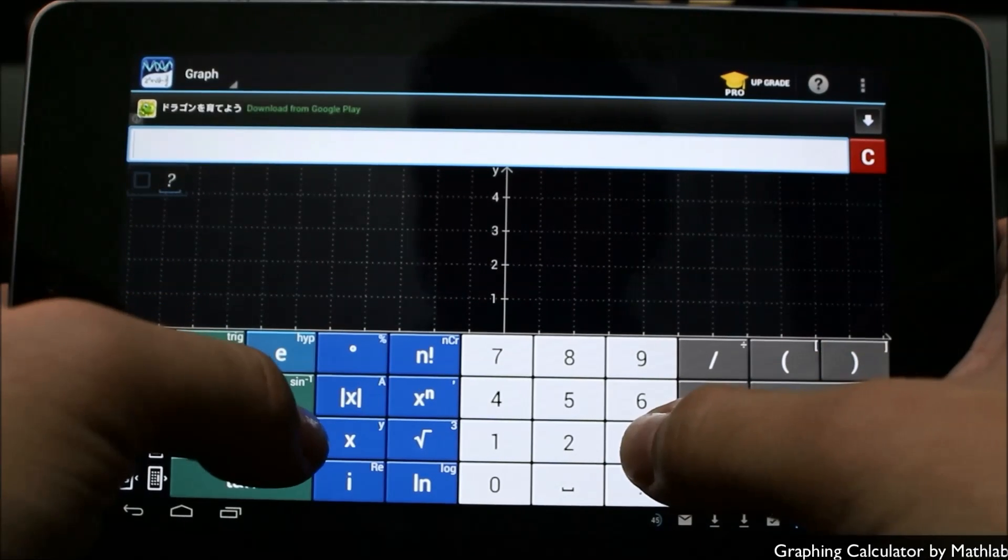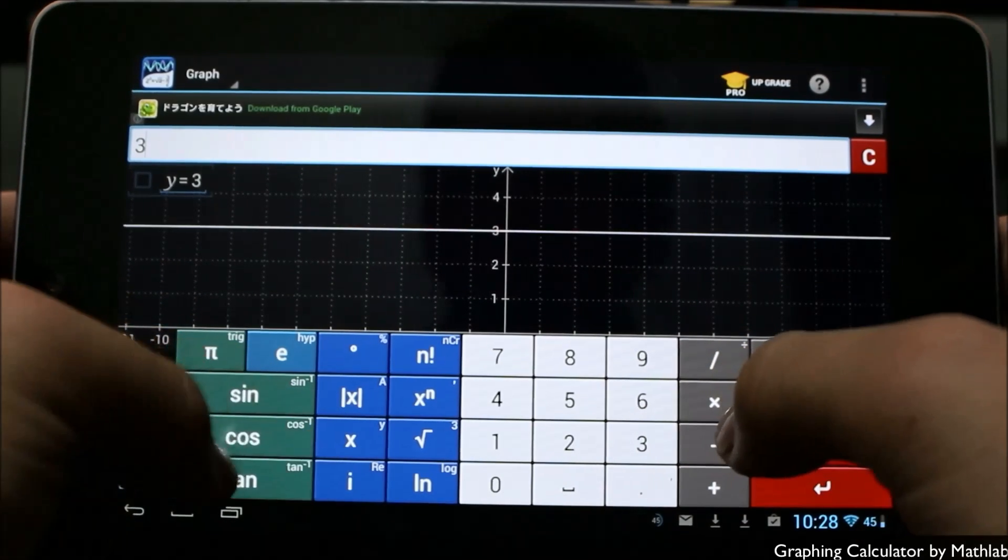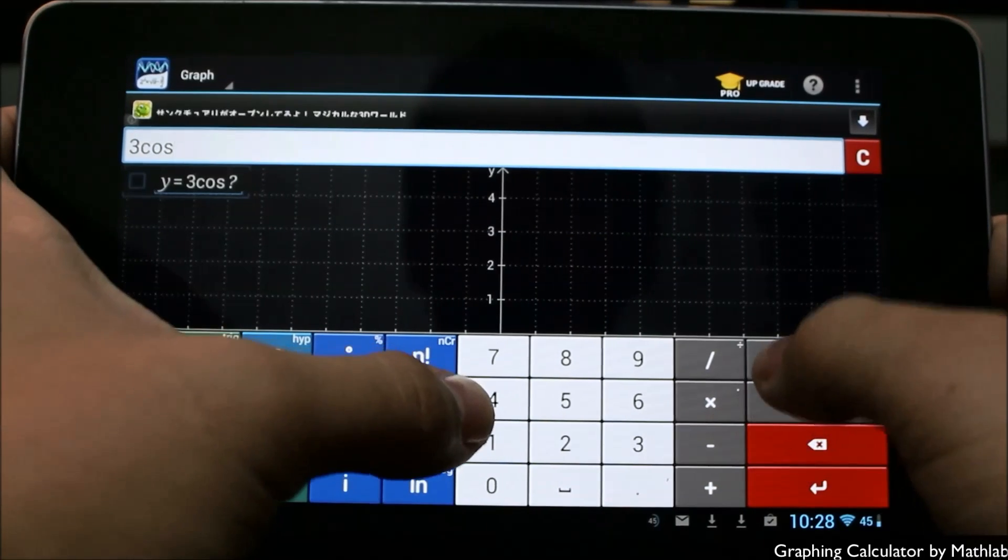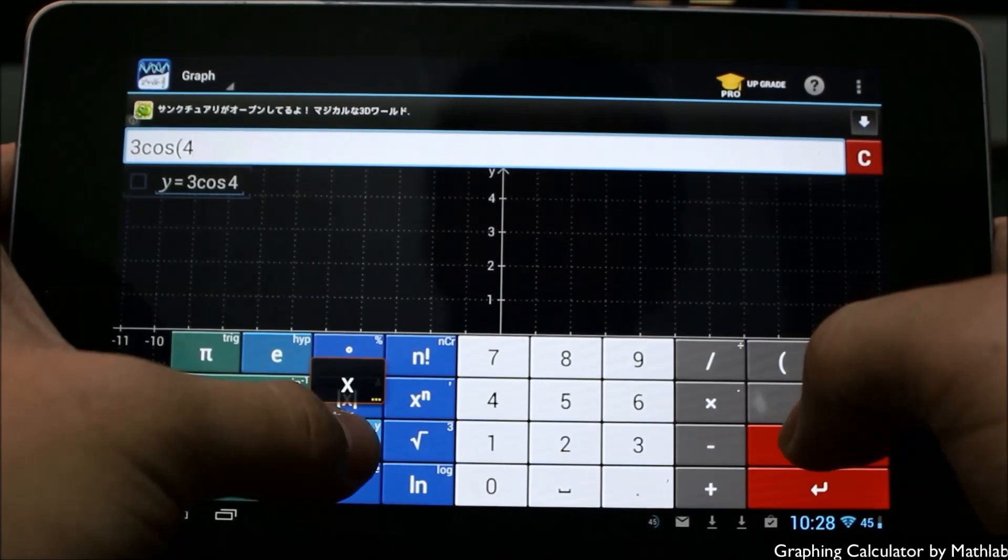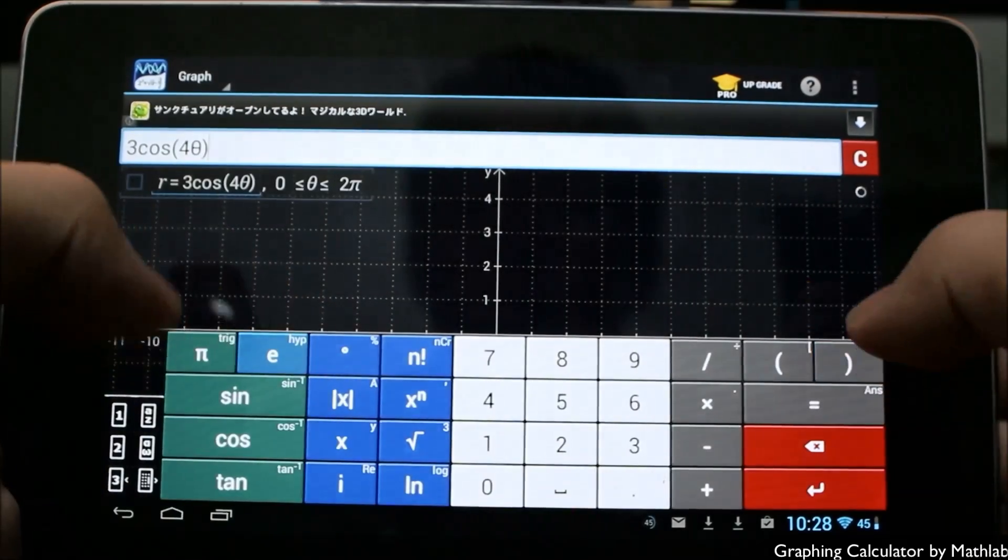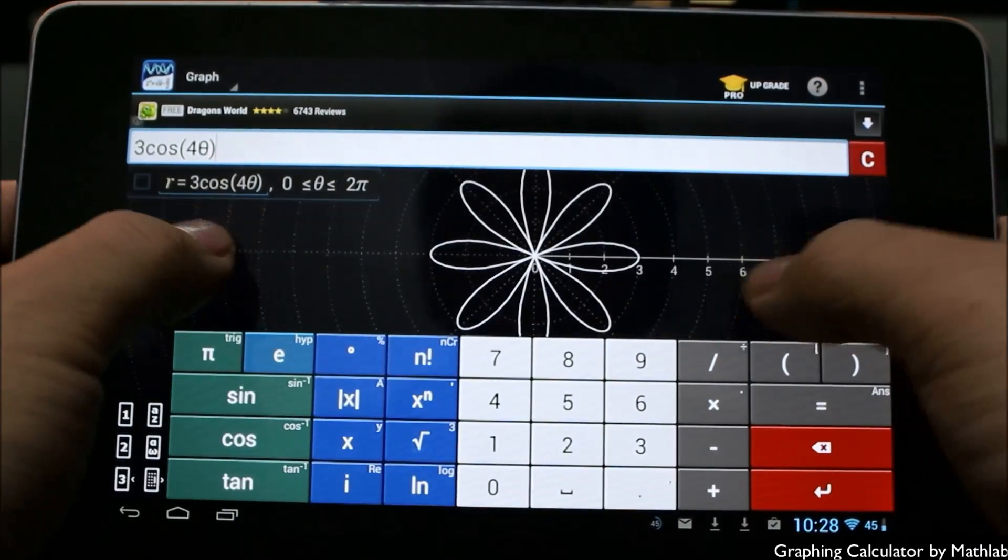Here we are in the graphing mode, so we can easily just go ahead and type in three cosine. As we do in here, parenthesis four, all the variable, go over here, and you can see as you do that it inputs the graph here.